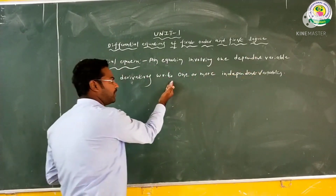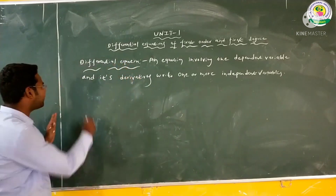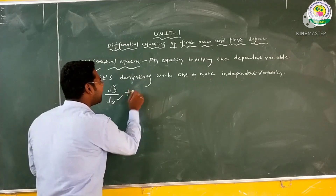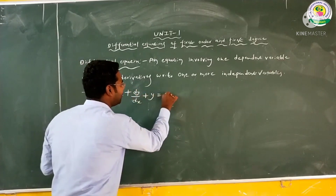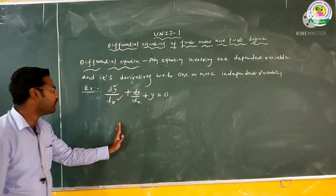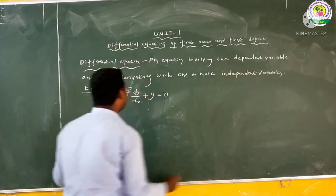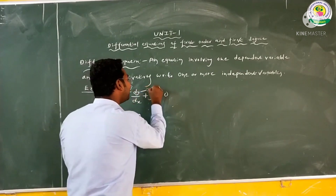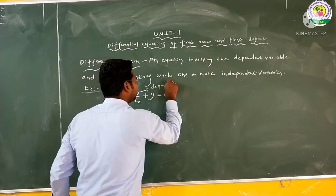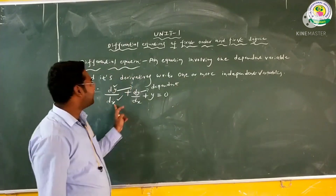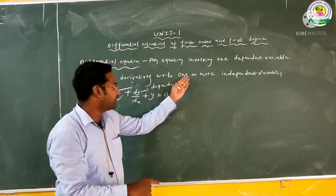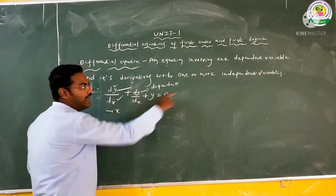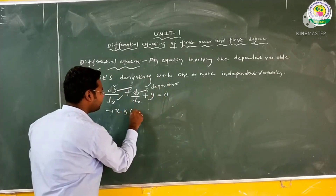See one example: d²y/dx² + dy/dx + y = 0. In this differential equation, y is called the dependent variable — we observe d²y/dx² and dy/dx. Here y is the dependent variable and x is the independent variable. Here there is only one independent variable, x.